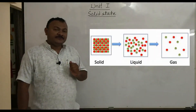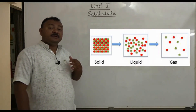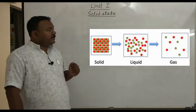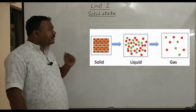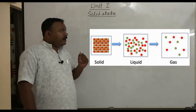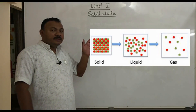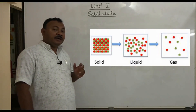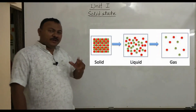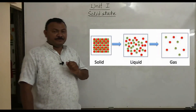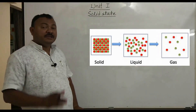Now look at the arrangement of the particles, which decides the existence of matter in a particular physical state. In solids, particles are present very close to one another and held by strong attractive forces. As we move from liquid to gases, the distance between the particles goes on increasing, and as a result, attractive forces are decreasing. So in solids, particles are held by very strong attractive forces, and as a result, particles cannot move from one place to another — they simply oscillate.